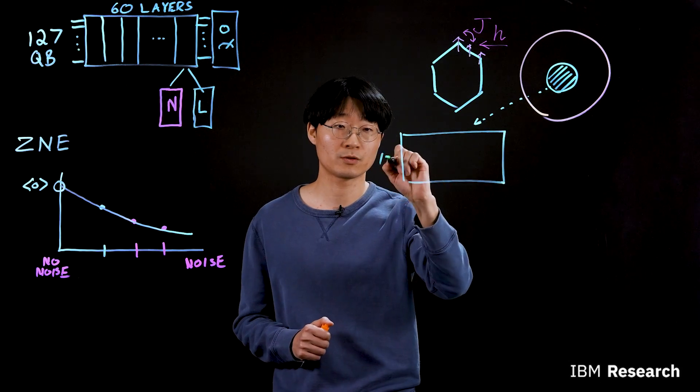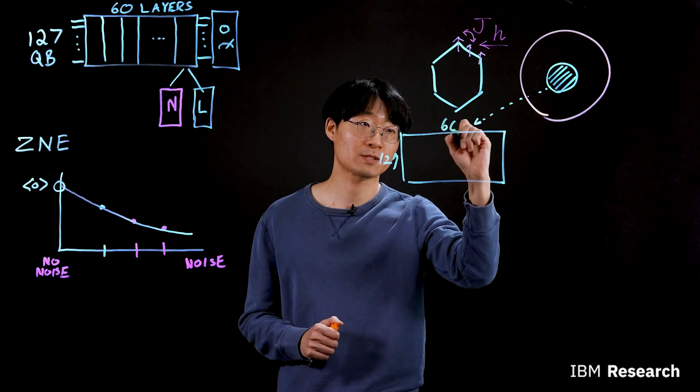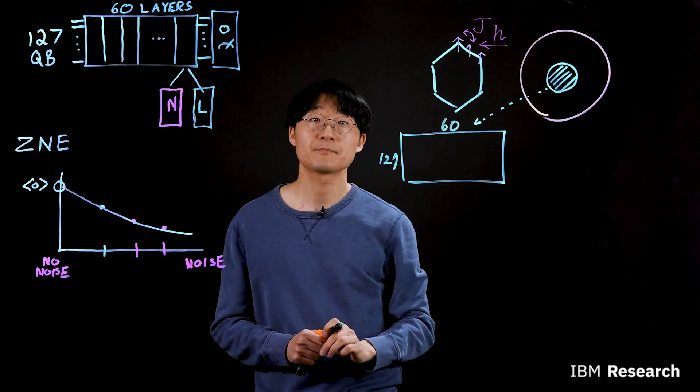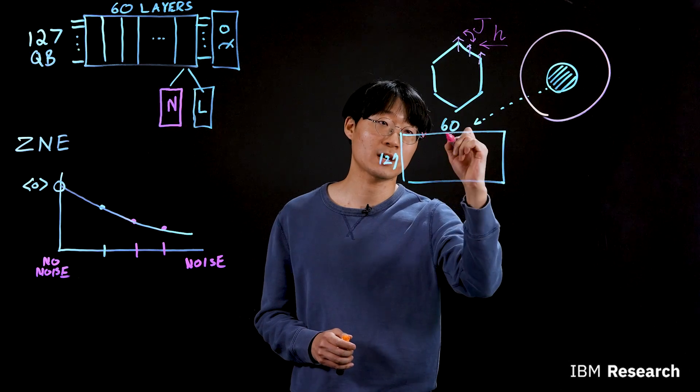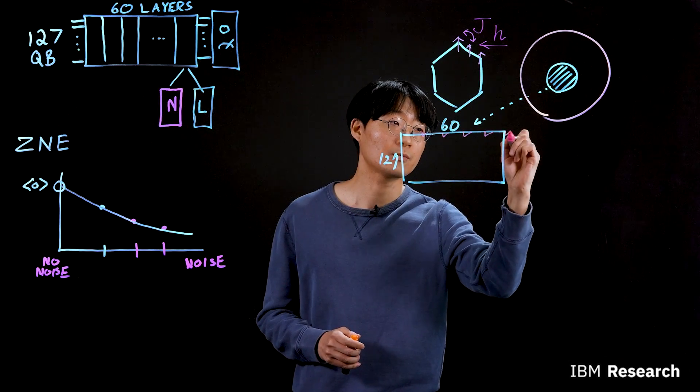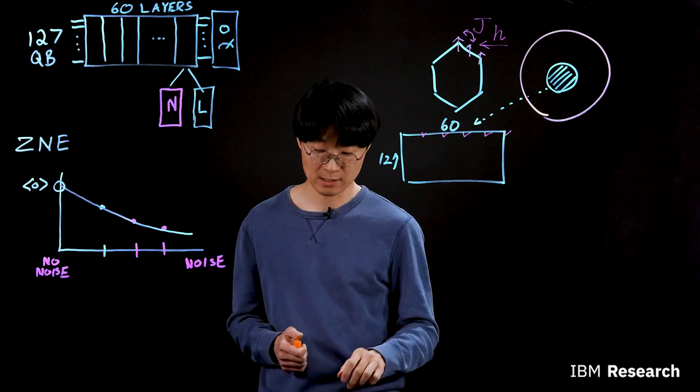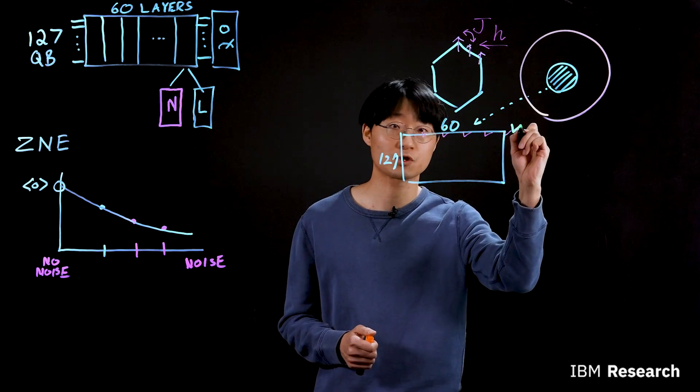So here's the circuit 127 qubit and depth of 60 two qubit gates. And since we know the exact solution along the way, we check our results from quantum computer and that agrees well with each other. So there's one check.